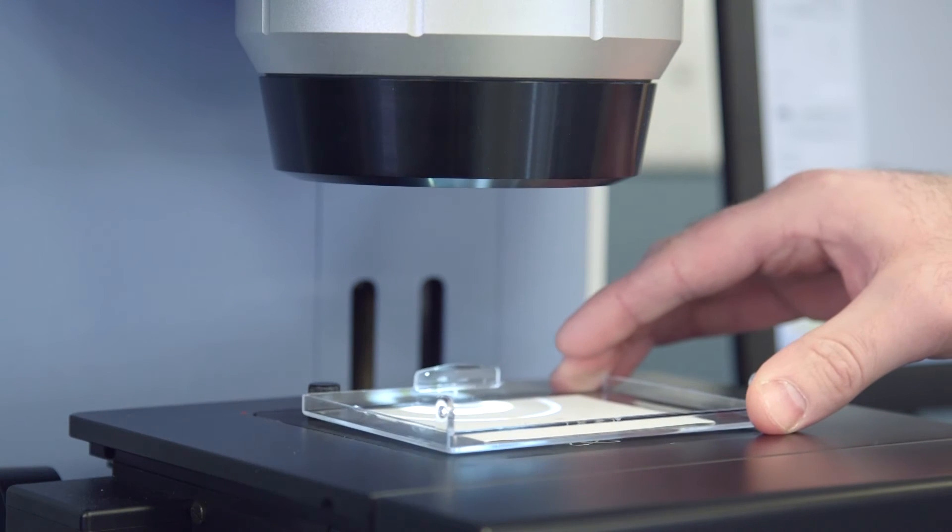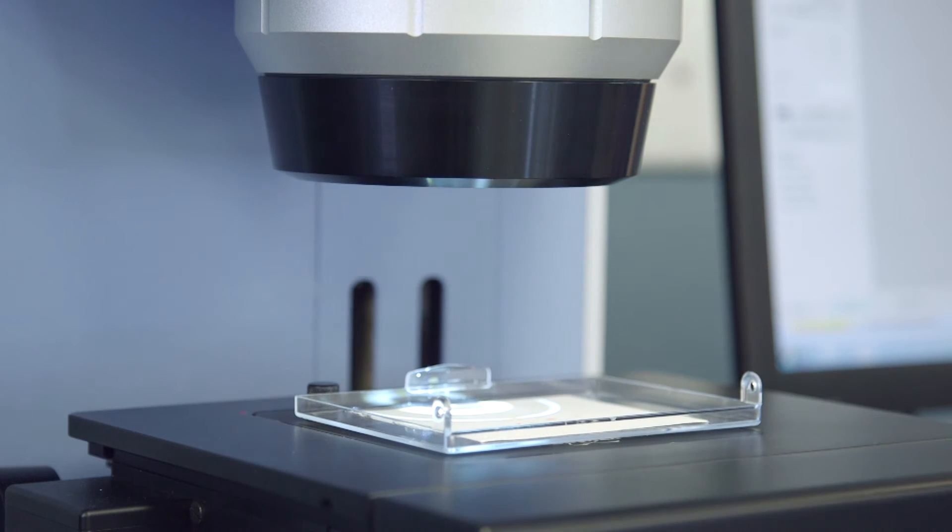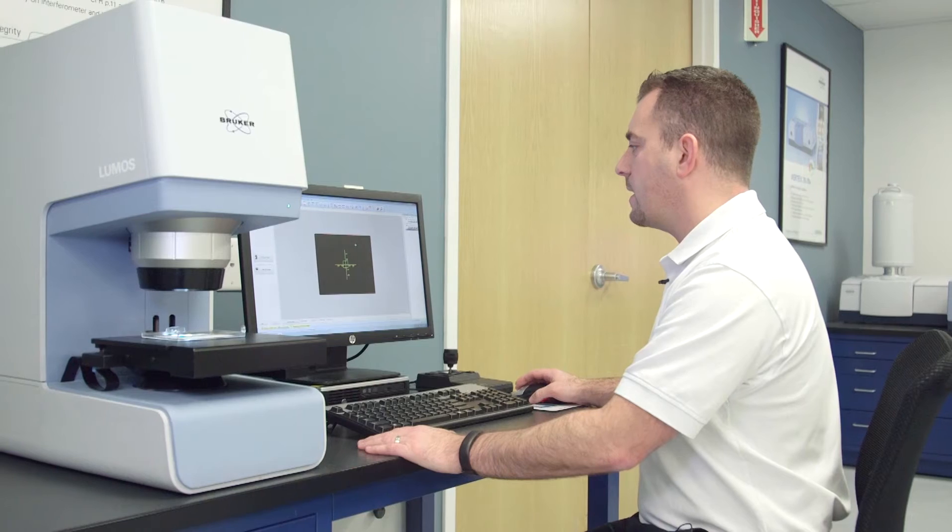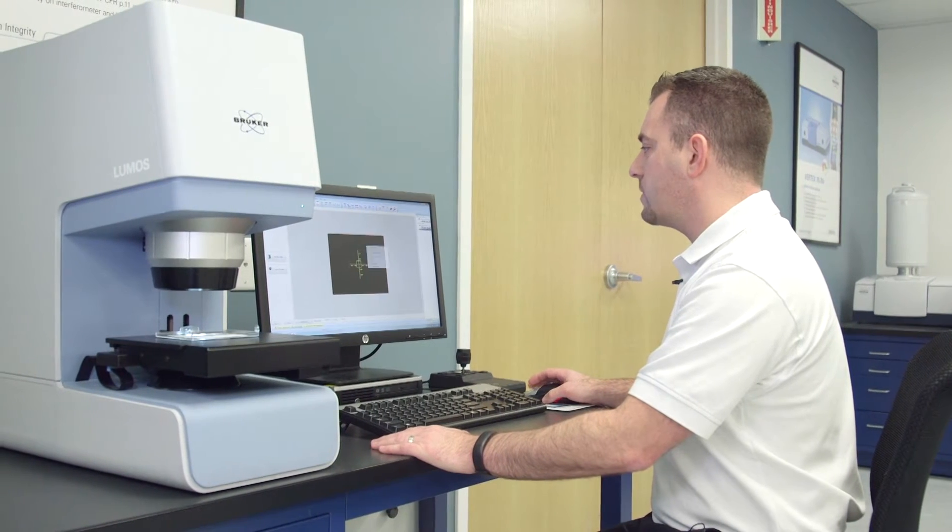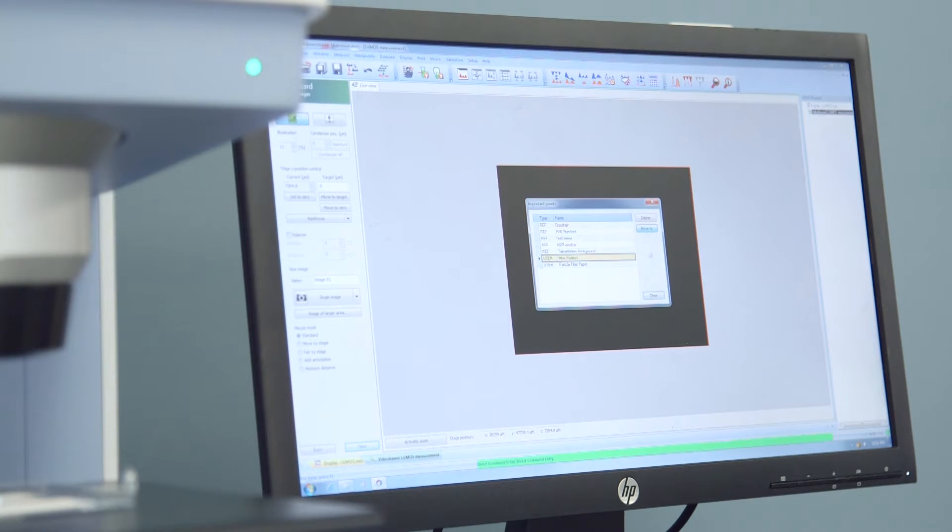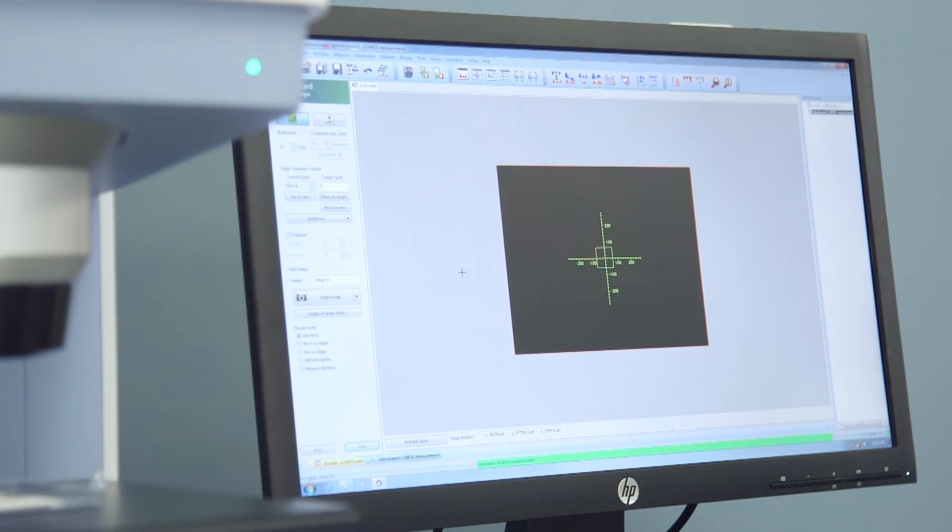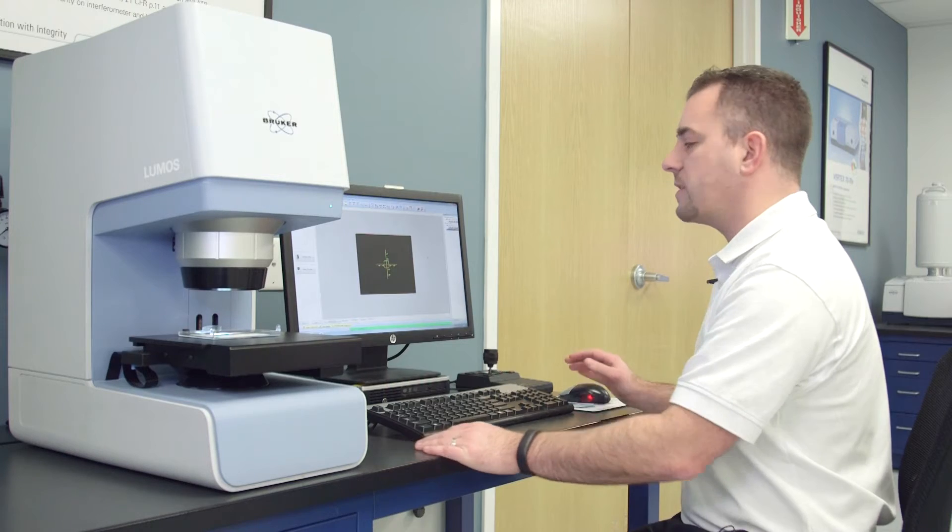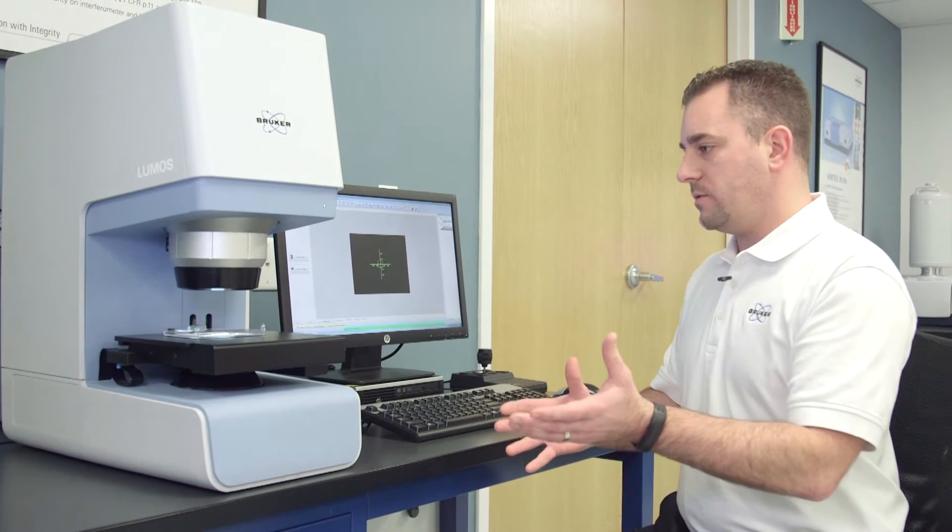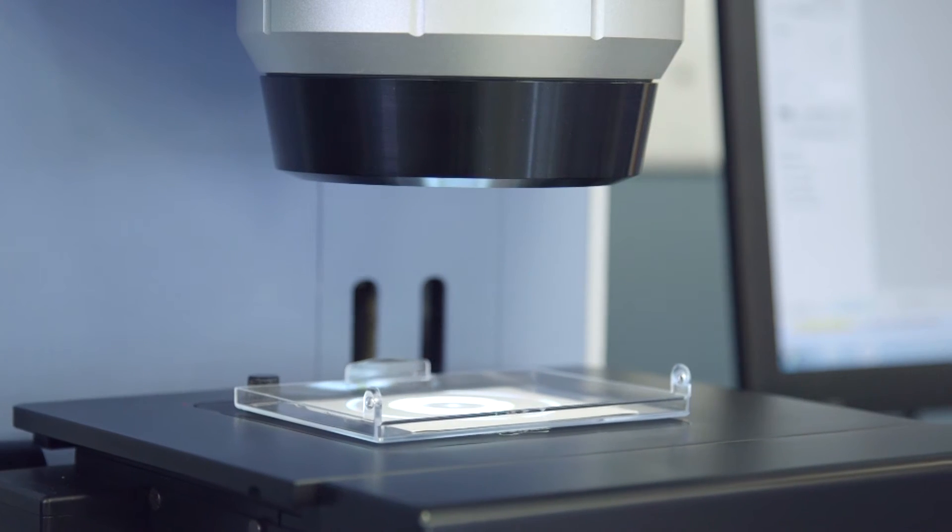So first I'm going to put it right around the stage, I'm going to come over to the software, and in the software I have some pre-loaded points. In particular I can go to my filter paper position and what this does is it brings the stage to the best point of focus for my filter paper.